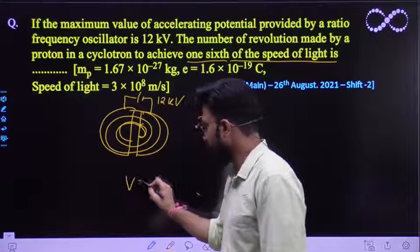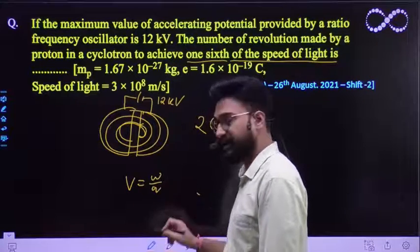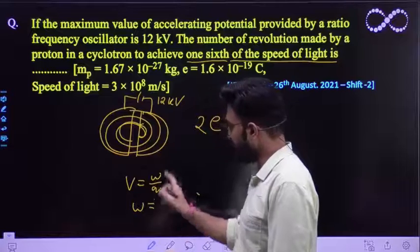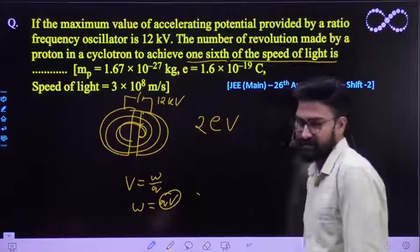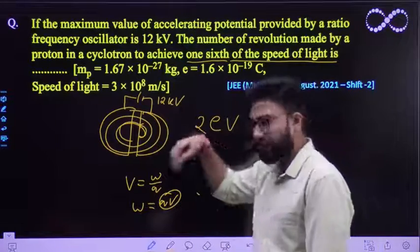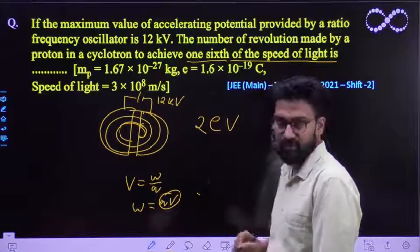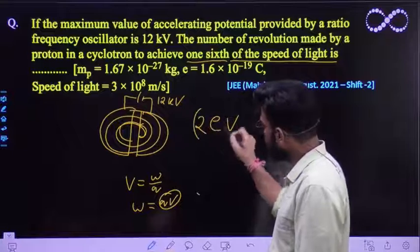We already know that potential is nothing but work done per unit charge. So any work done on the charge must be equal to Q into V. So this is the value that we are getting. Again the work is done twice so that's why this has to be 2. So this is for one revolution.